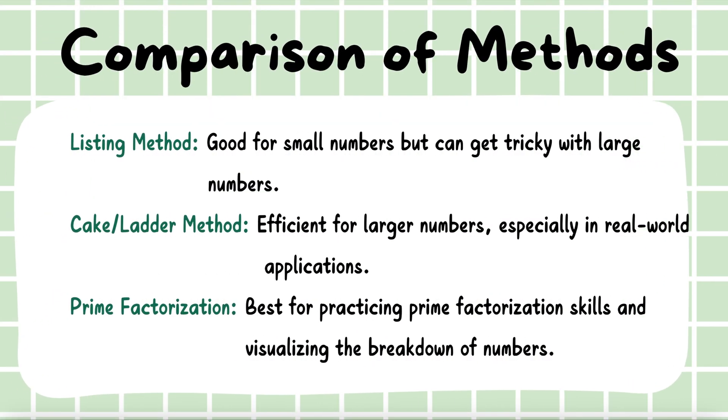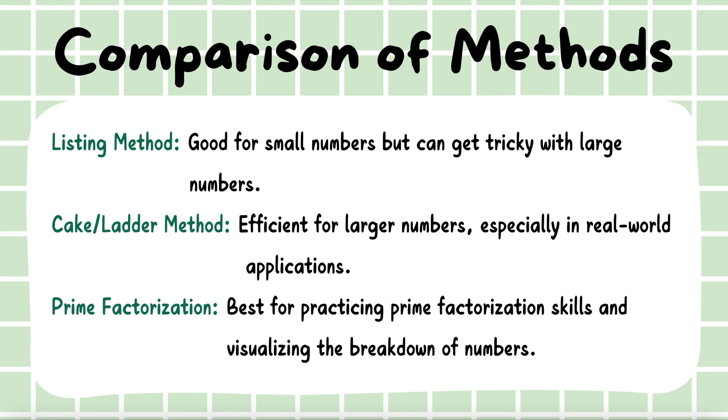This is a quick comparison of the methods if you're trying to decide which one you want to use. The listing method is great for small numbers but can get tricky with larger numbers. The cake and the ladder method is efficient for larger numbers especially in real-world situations and prime factorization is best for practicing our factorization skills but we have to know our factors and we have to be able to visualize the breakdown of the numbers.